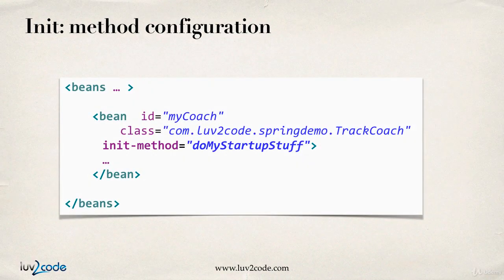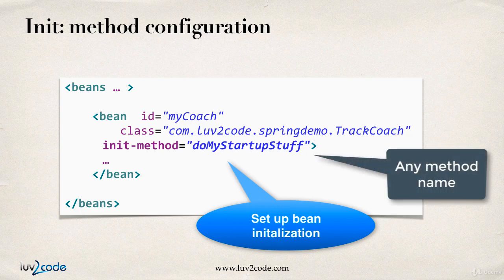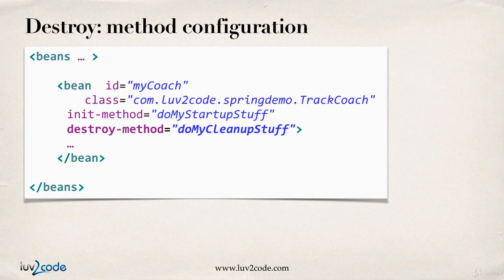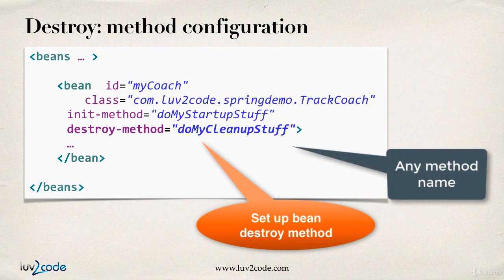So how would you do this? You simply make a configuration entry in your XML file. For bean initialization, you make use of an attribute called init-method, and then you give the actual method name that you would like Spring to call in your bean — this method name can be anything, for example DoMyStartupStuff. You can do a similar thing for the destroy method: simply give the method name you want Spring to call for destroy, and again, it can be any name.